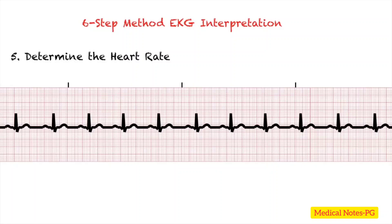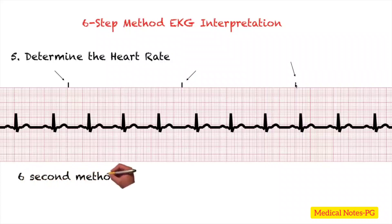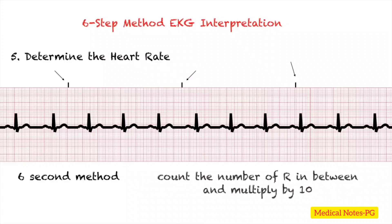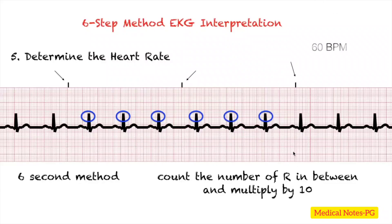Step five is identifying the heart rate. It is important to know whether your EKG is a six-second strip, identified by three tick marks on the strip. Using the six-second method, count the number of R waves between the three lines and multiply by 10. For example, counting six R waves and multiplying by 10 gives a heart rate of 60 beats per minute. This method works best for irregular rhythms.